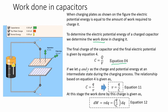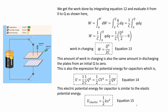If we let Q and V be the charge and potential at an intermediate state during charging, the relationship based on equation 4 is given as equation 11. At this stage, the work done by this charge is given as equation 12. We get the total work done by integrating equation 12 from 0 to Q. Equation 13 is the amount of work needed to charge a capacitor, and this is also the same amount involved in discharging the plates from an initial Q to 0. This is also the expression for potential energy for capacitors, shown as equation 14.